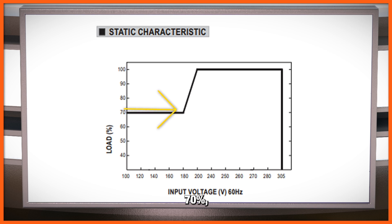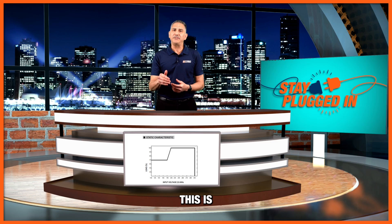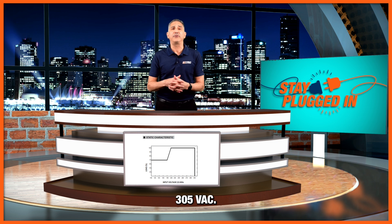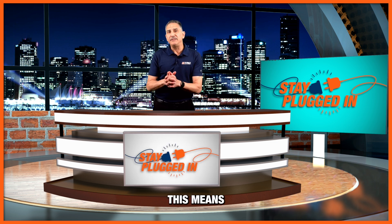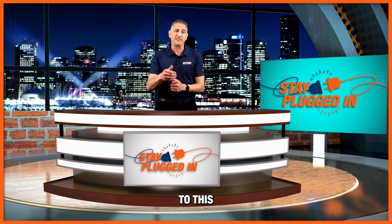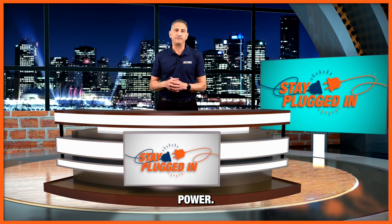This graph also shows that the 70% derating is recommended up until your input voltage is above 180 volts AC. At that point, the graph goes sharply up until you can see that above 200 volts, the full power can be delivered by that power supply, all the way up to the maximum input voltage of 305 volts AC. This means that at the rather common input voltage of 230 to 240 volts AC — which we refer to as high line — you can safely operate the power supply at 100% of the output power.